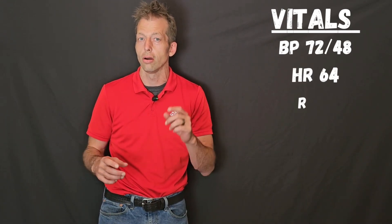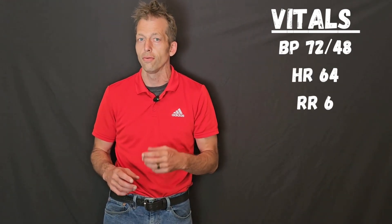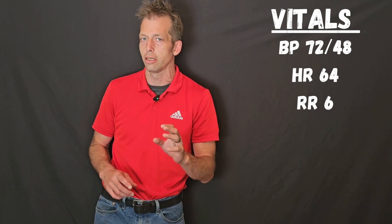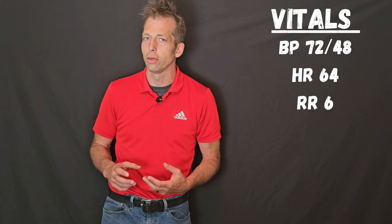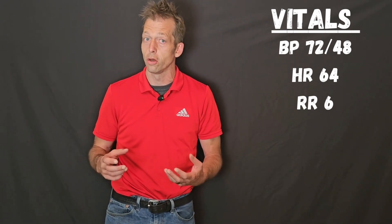Here's a national registry question for you. You have a patient with a blood pressure of 72 over 48, heart rate of 64, respirations are six times a minute — what type of distributive shock are they most likely in?